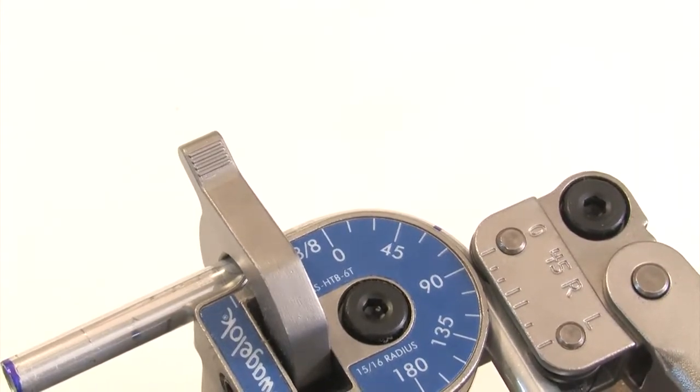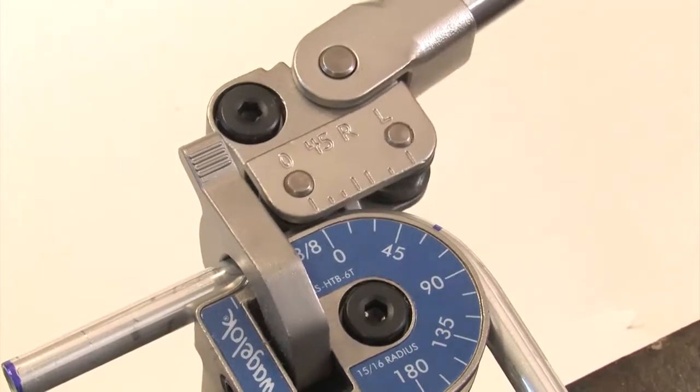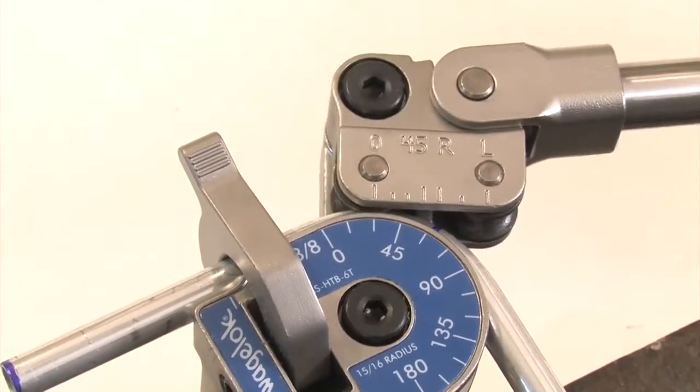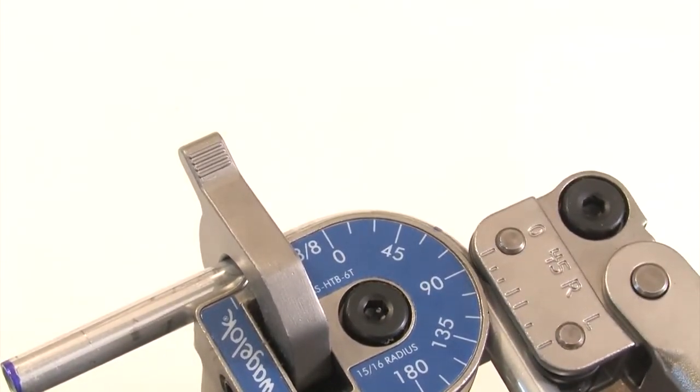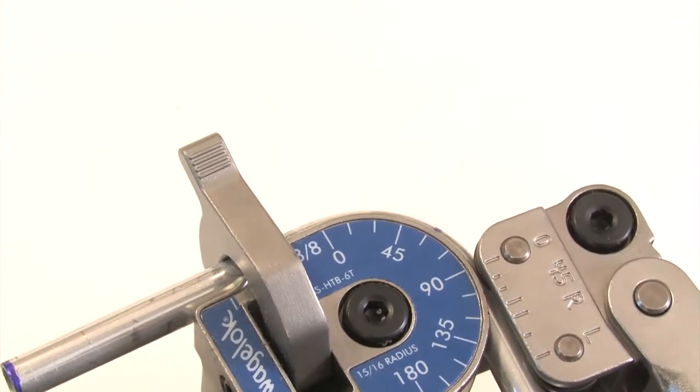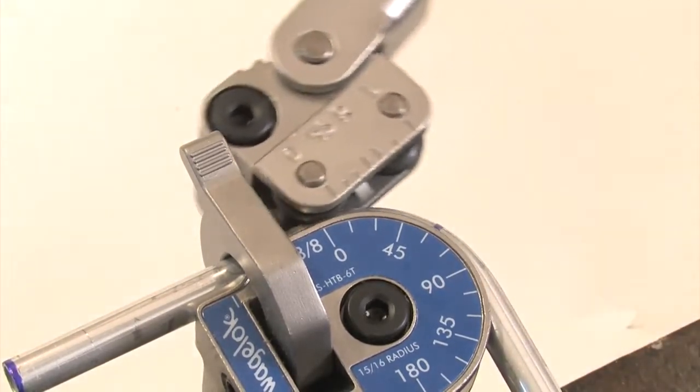Lift the short handle away from the tube. The tube may spring back. To correct this, pull the short handle down again and bend until the 90 degree mark is reached.